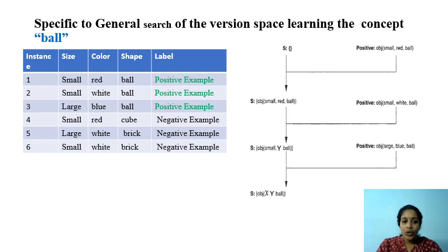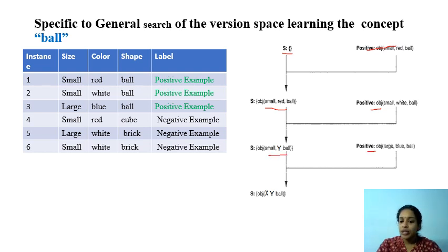To conclude the whole process: we started from the most specific hypothesis S. On seeing the first positive example we set the hypothesis to (small, red, ball). On the second positive example we updated it to (small, y, ball). On the third positive example we updated it to (x, y, ball). On seeing all the negative instances, our hypothesis (x, y, ball) clearly rejects all of them.